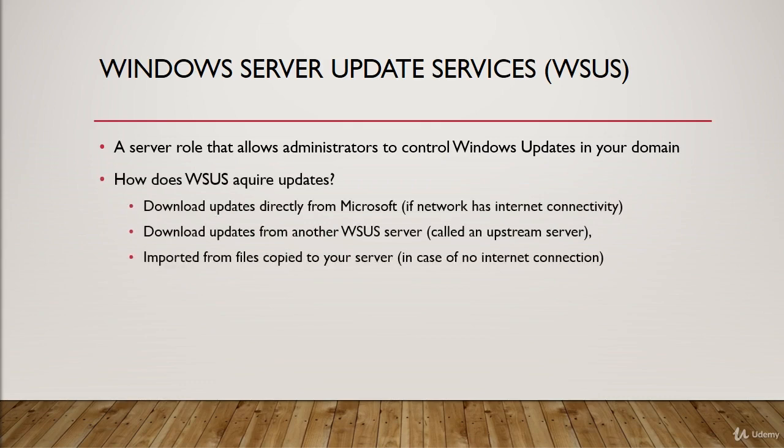There are a couple of different ways that WSUS can acquire updates. First, you can download updates directly from Microsoft — this is a viable option if your network has internet connectivity. Second, you could download updates from another WSUS server, which would be called an upstream server.